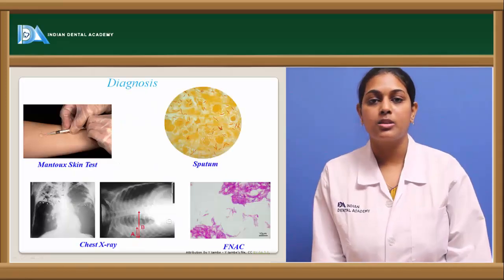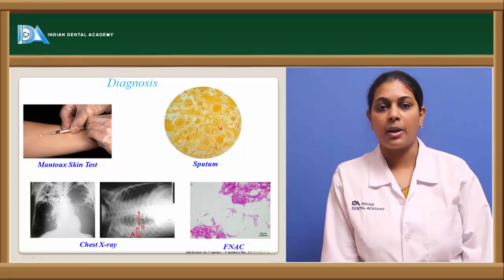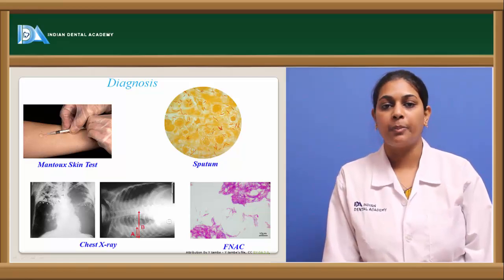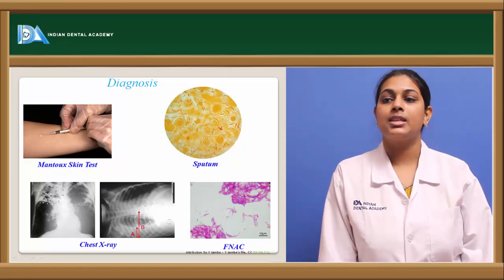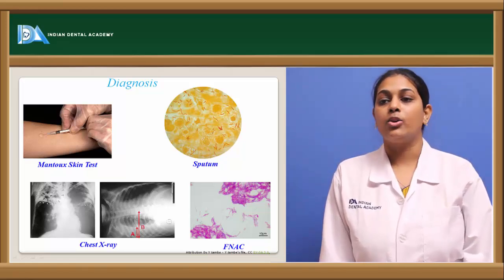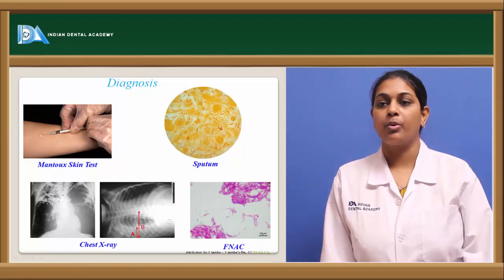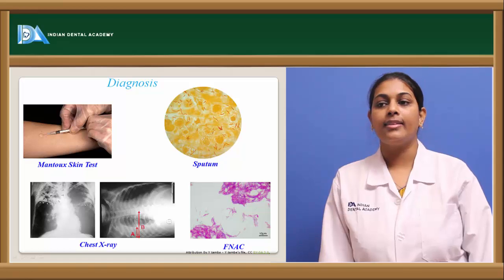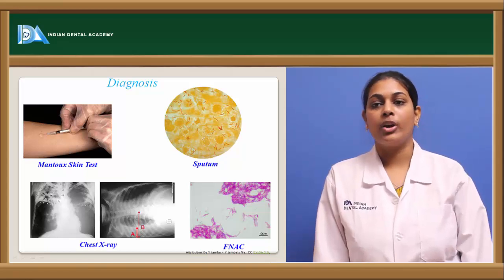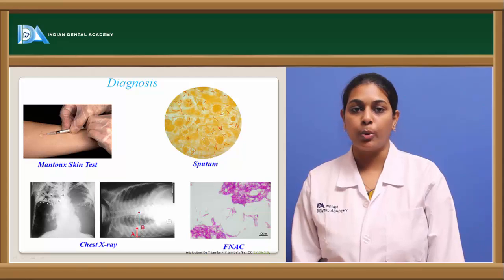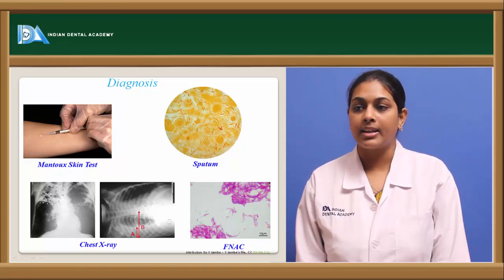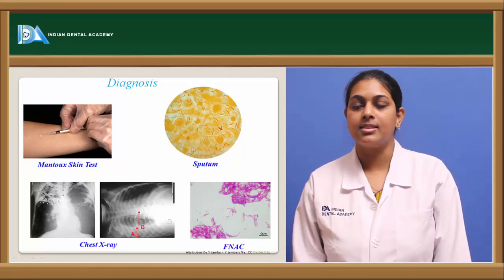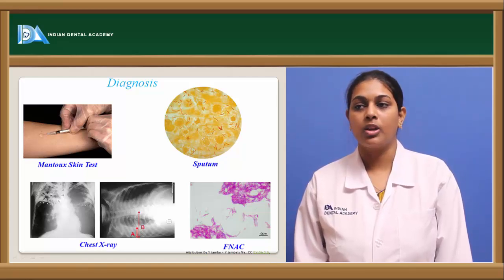Coming to diagnostic aids: the Mantoux skin test is the primary diagnostic aid. Chest X-ray is also advised — pictures show black arrows indicating pleurisy and white arrows showing enlargement with surrounding peripheral tuberculosis pneumonia. In another picture, there is a decrease in the size of the lung because of pleurisy.